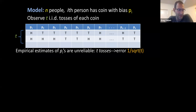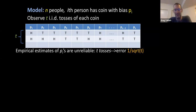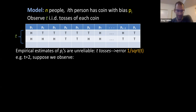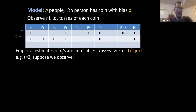Starting with the absolute basics: if you just look at the empirical estimates of the p_i's, and we toss each coin t times, the error in each of the p_i's is going to be roughly one over square root t. The question is: can we hope to do better than this? I want to illustrate that we should actually be optimistic that maybe we can do better.